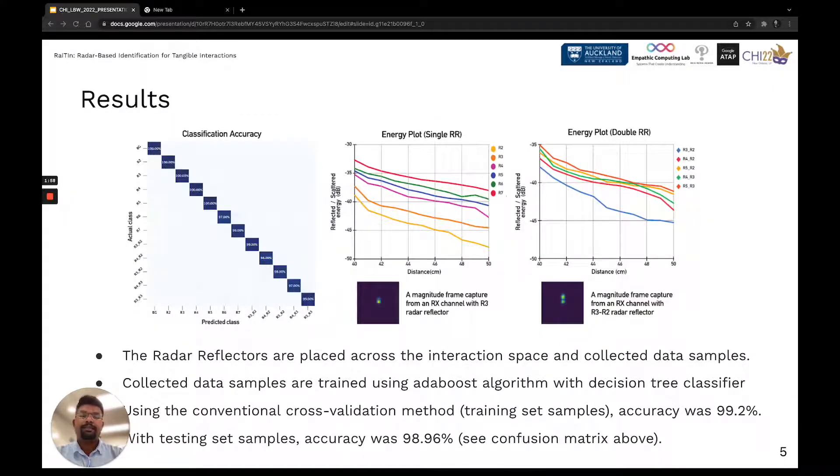The radar reflectors are placed across the interaction space and collected data samples. The collected data samples are trained using Adaboost algorithm with classifier as decision tree. The confusion matrix shown in the figure shows the accuracy of testing set, which yielded 98.96%.